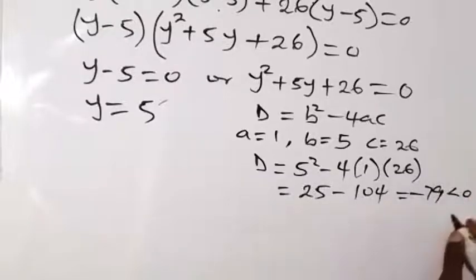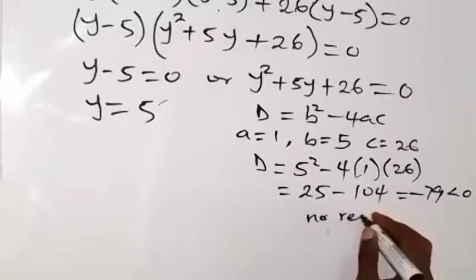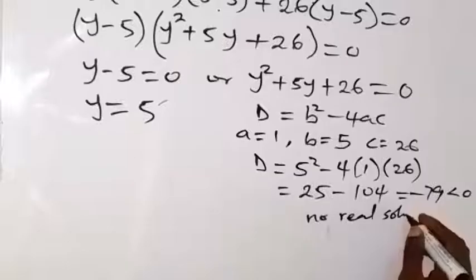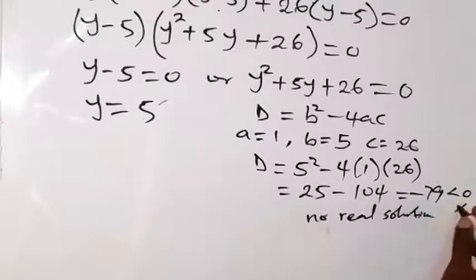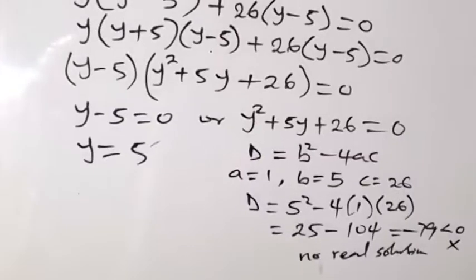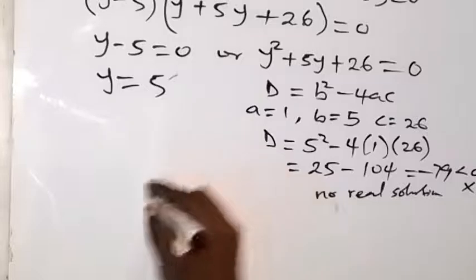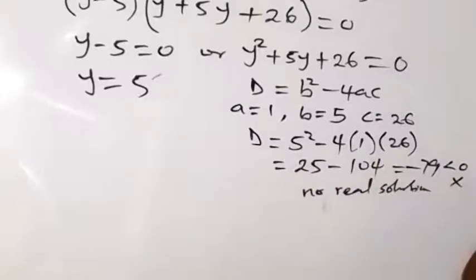So there will be no real solution here. Since we have less than 0, so no real solution here. So we can reject this. And therefore, we have y equals to 5 as a solution here. But we know that our y has been represented with 2 raised to power x. So we can bring it down and say, therefore, 2 raised to power x equals to 5.